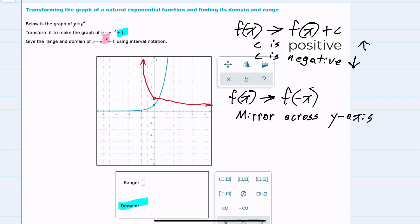From here, our domain is going to be all of our possible x values. We could plug any x value in. So our domain is going to be negative infinity to positive infinity, not inclusive.